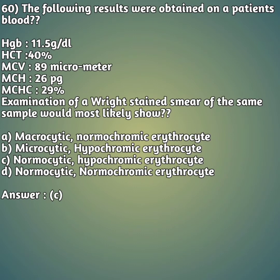Moving on to our 60th question - also a case study. The following results were obtained on a patient's blood: HB is 11.5 g/dL, HCT is 40%, MCV is 89, MCH is 26 picograms, MCHC is 29%. Examination of a stained blood smear of this sample would most likely show - option A: macrocytic normochromic erythrocytes. Option B: microcytic hypochromic erythrocytes. Option C: normocytic hypochromic erythrocytes. Option D: normocytic normochromic erythrocytes.